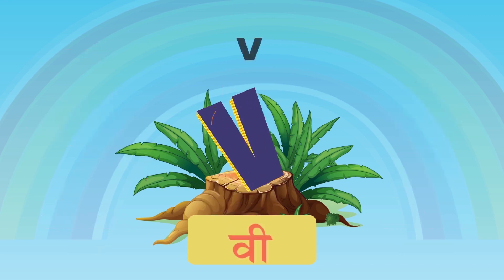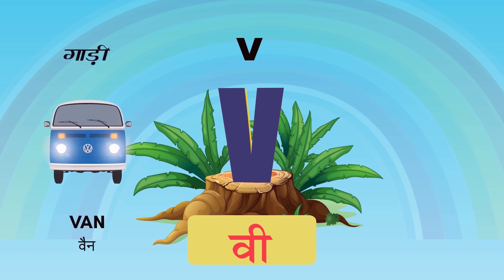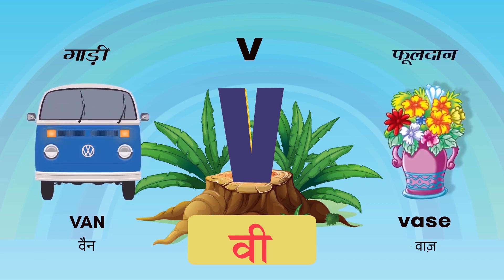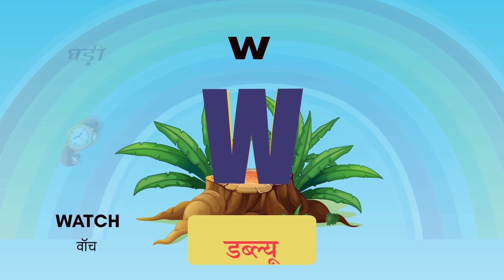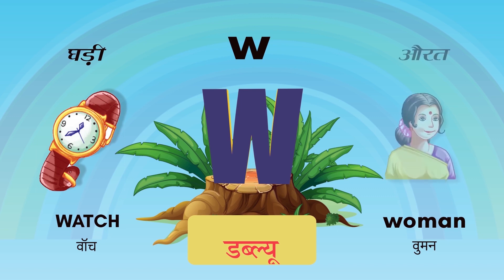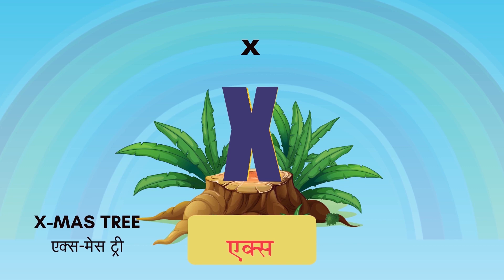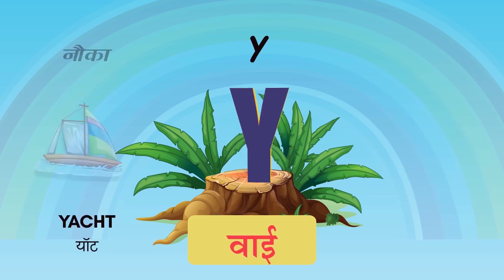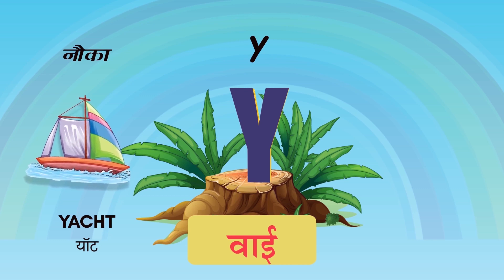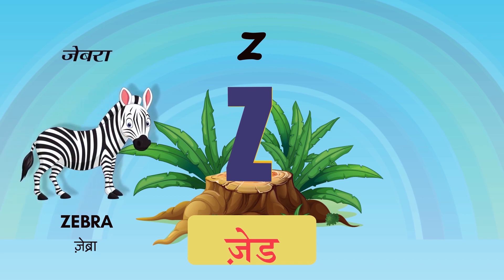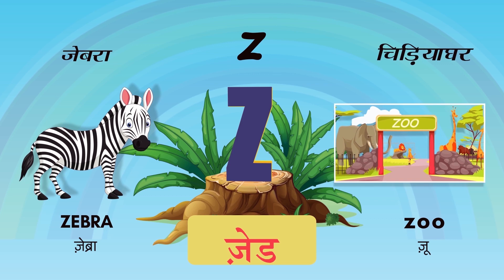V for Van, Yaani Gaadi. V for Vase, Yaani Phooldan. W for Watch, Yaani Ghadi. W for Woman. Z for Zebra — safed aur kaali dhariyan hoti hain uske shareer par. And Z for Zoo, Yaani Chidiyaghar.